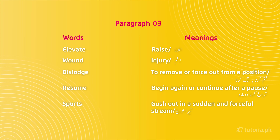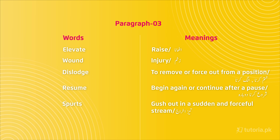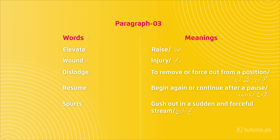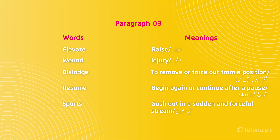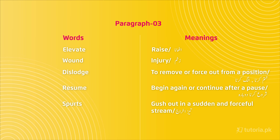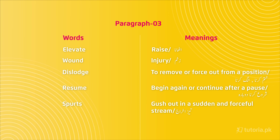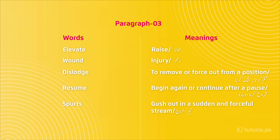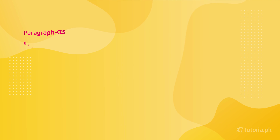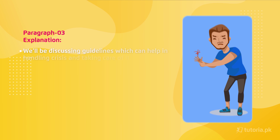Toh ek dam se us ke andar se jo us ka content niklega, us ko aap kahoge it is gushing out. Let's move on to the explanation of the third paragraph.